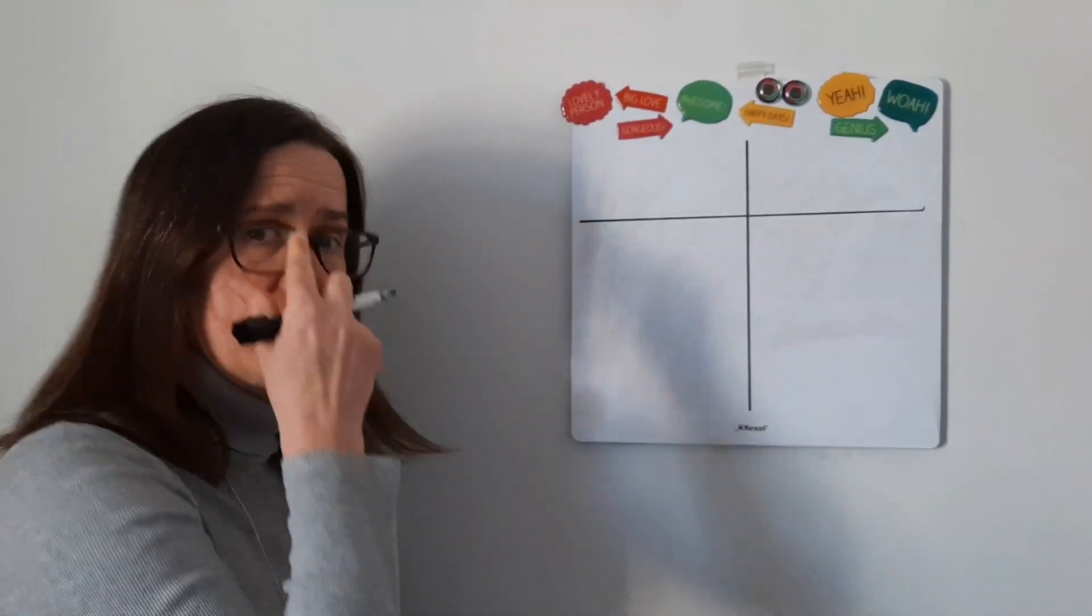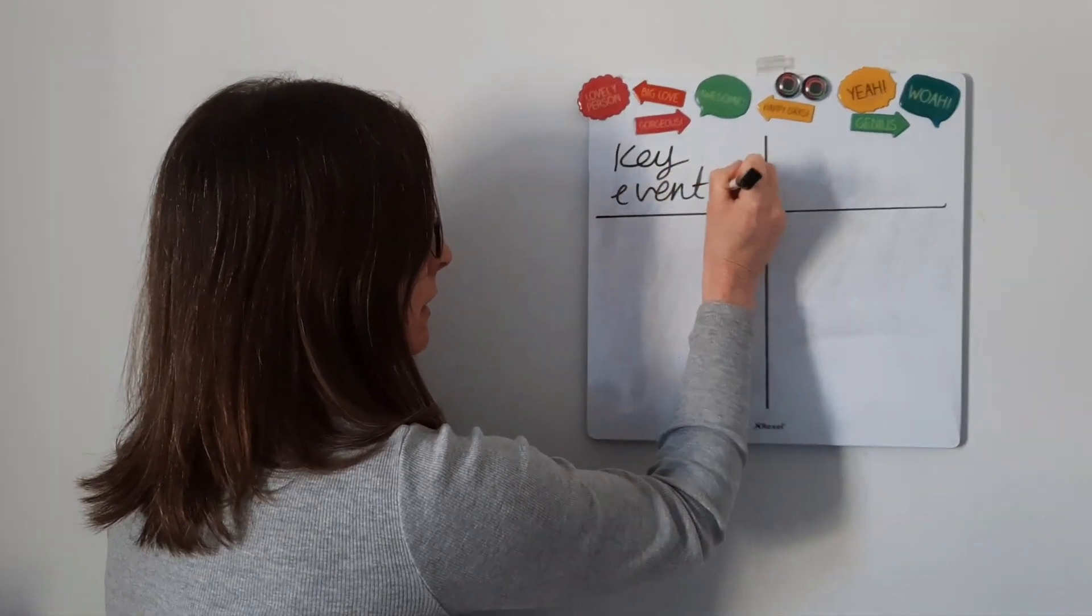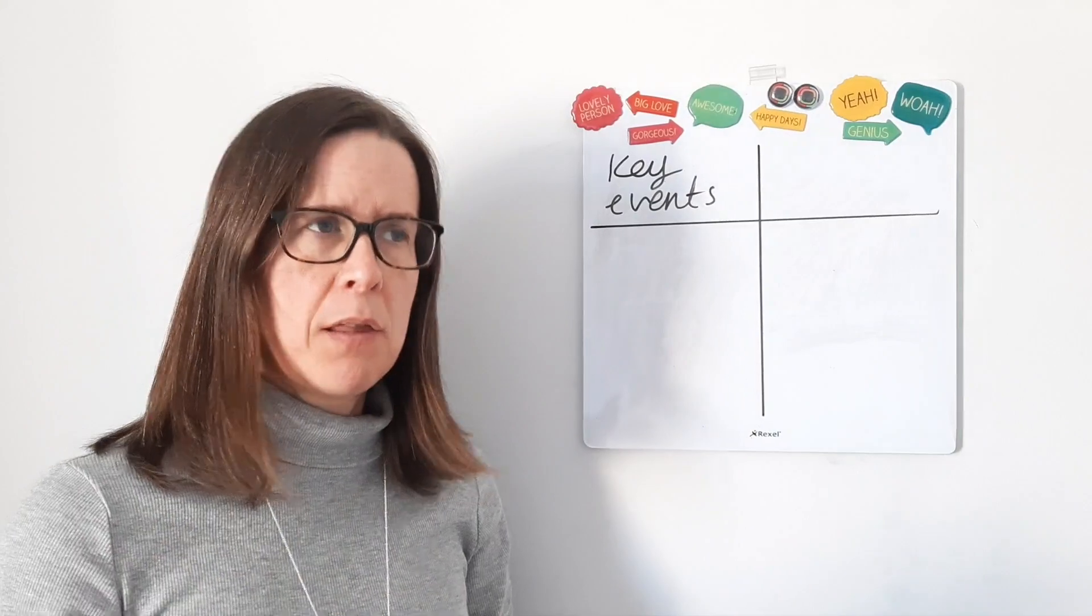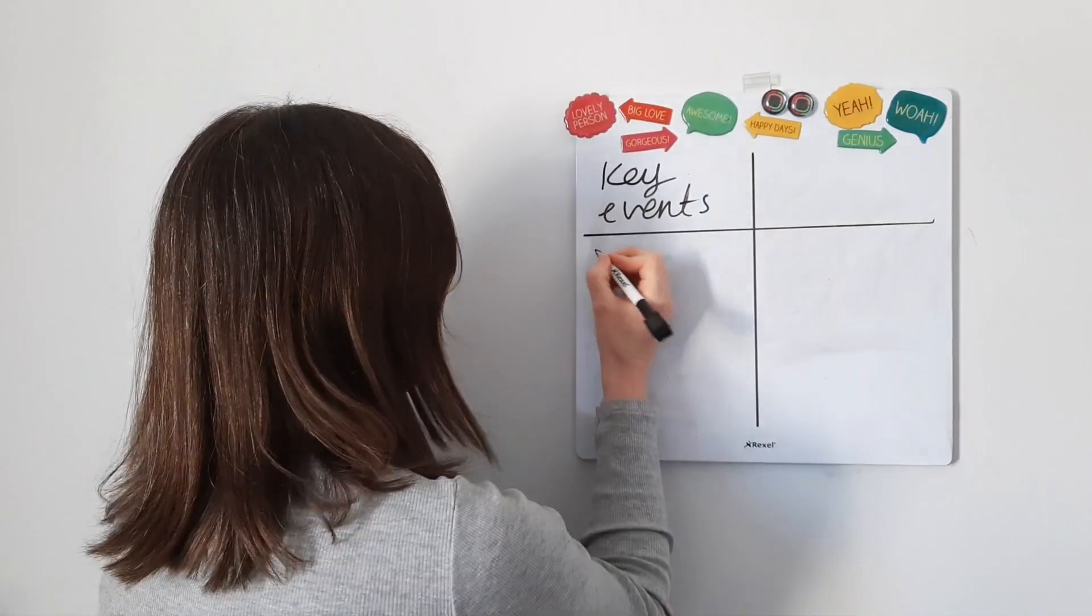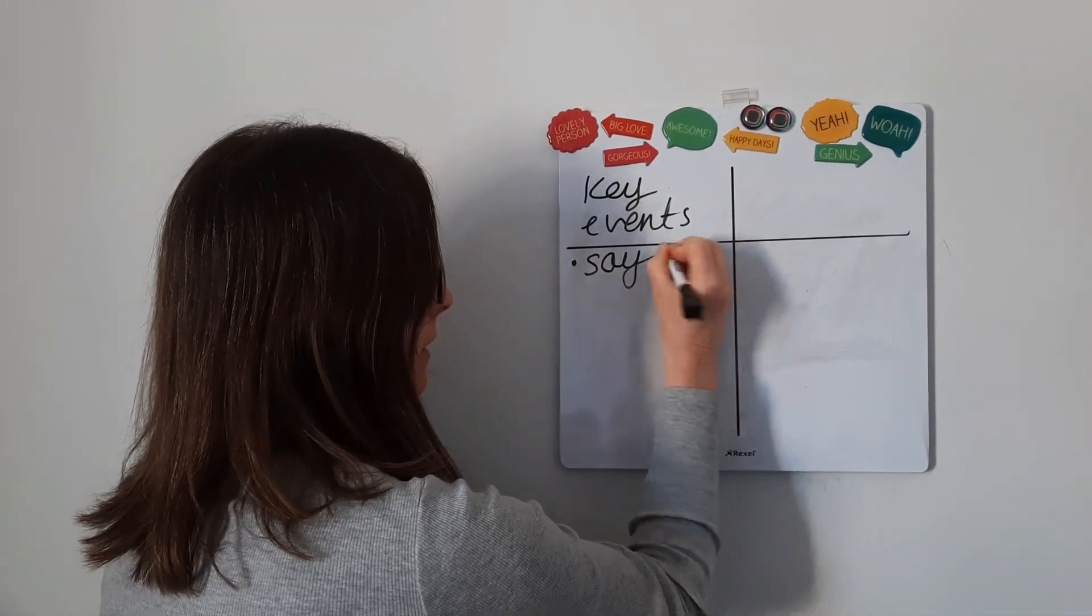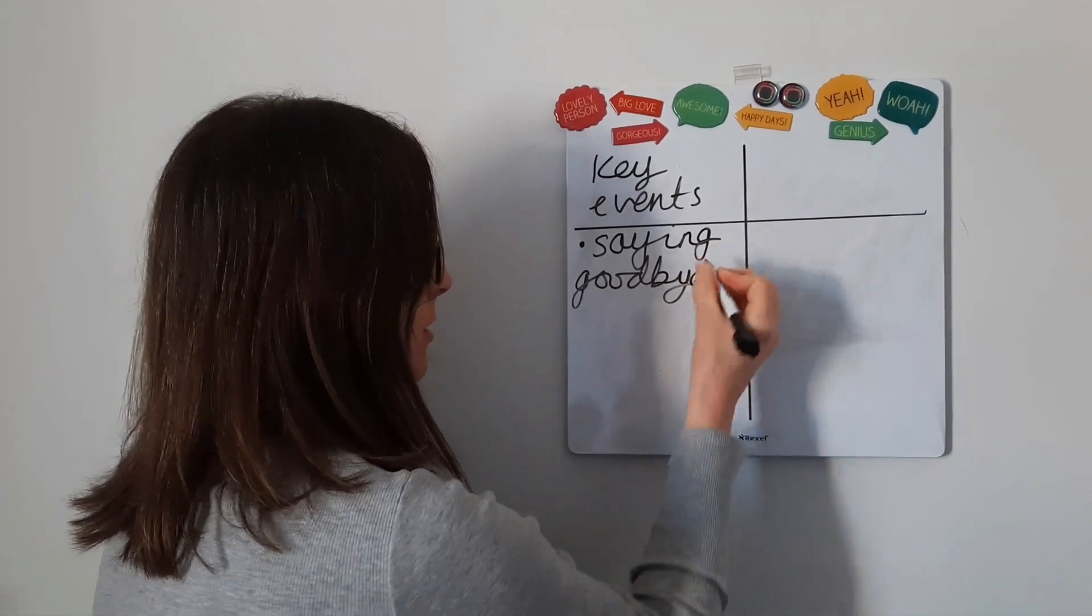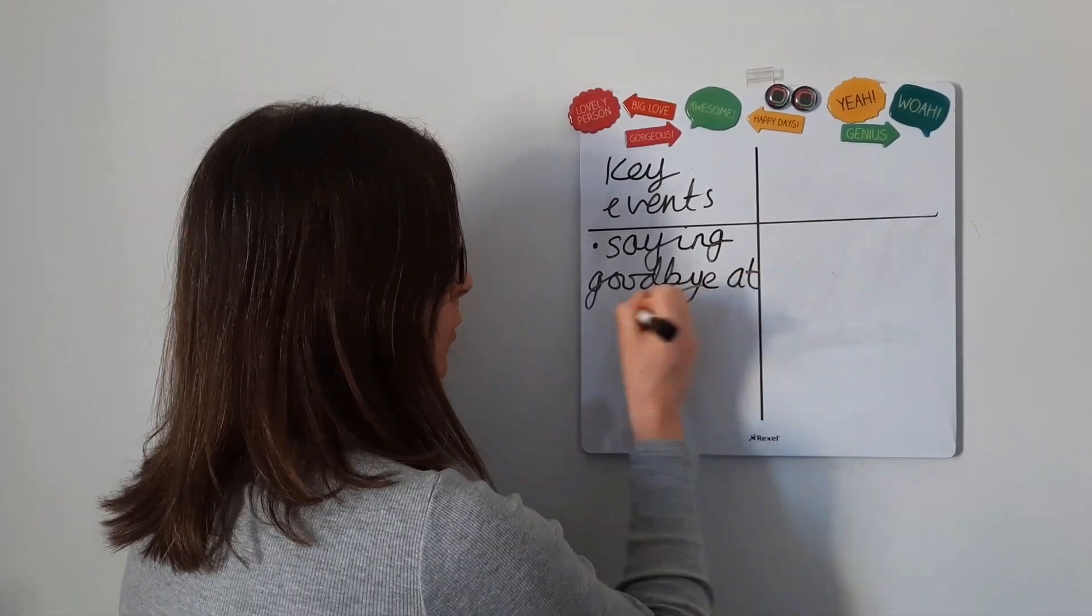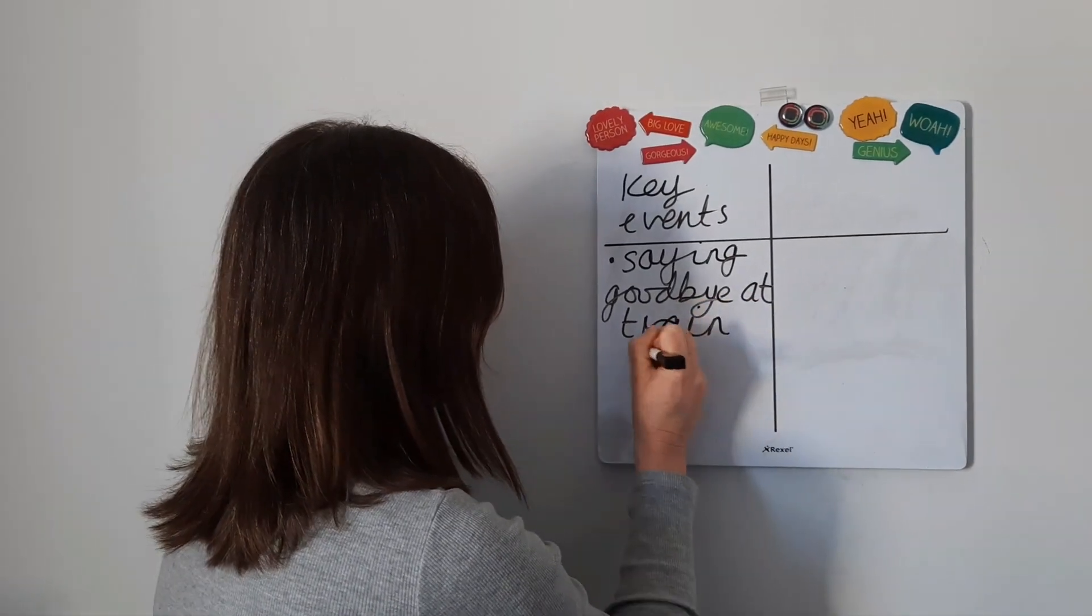On this side you're going to have key events, so you can write down anything that you think was important in the evacuee's story. For example, the first thing might be saying goodbye at the train station, maybe to their parents or their grandparents, or it could have been at the bus station, depending how you decide your evacuee got to Michelin Priory.